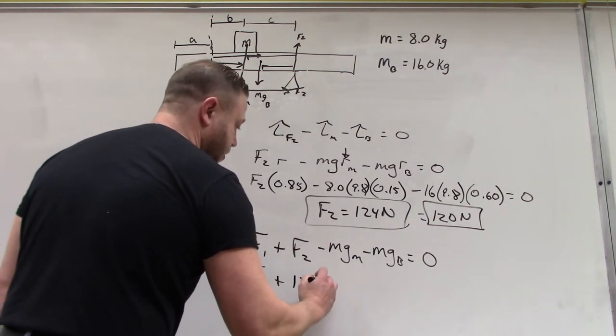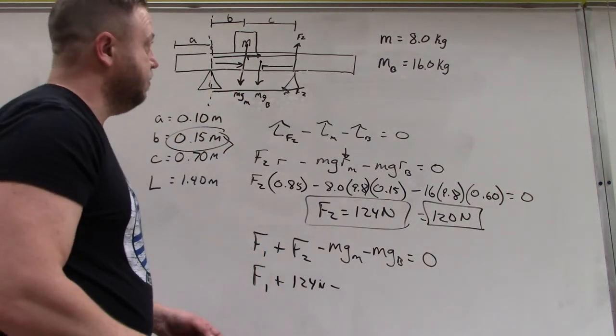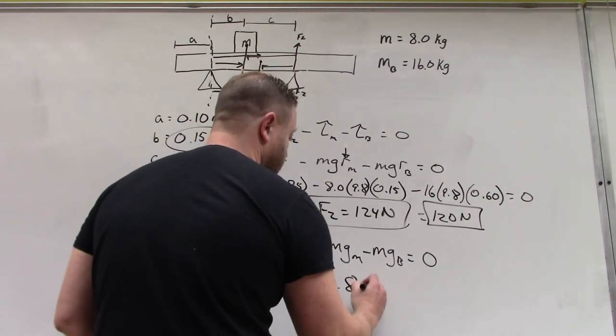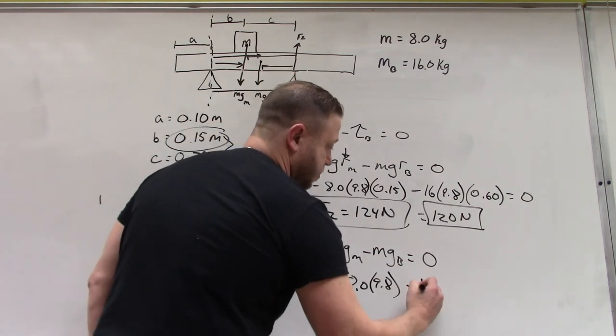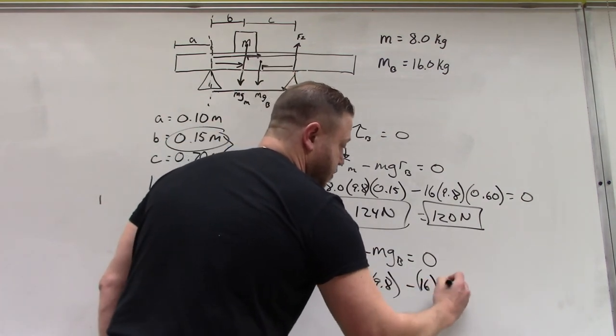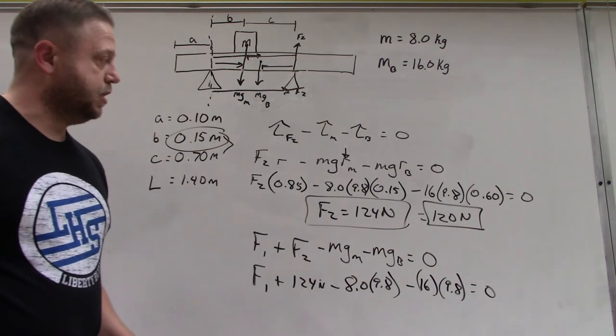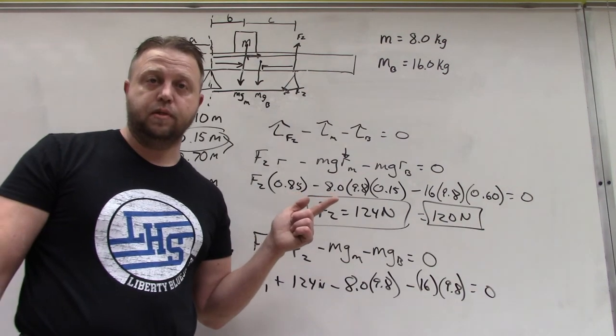Minus mg of the mass, 8 times 9.8, minus the beam, 16 times 9.8, equals zero.